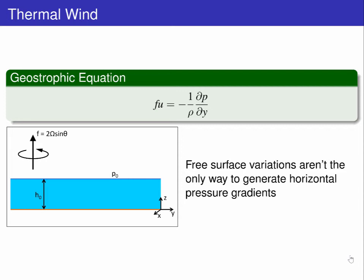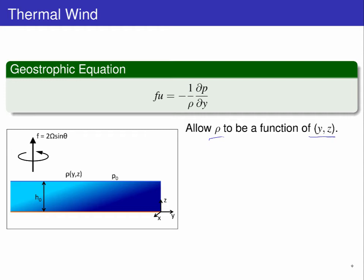Of course, free surface variations aren't the only way to generate horizontal pressure gradients. Another way is to allow the density to be a function of y and z.